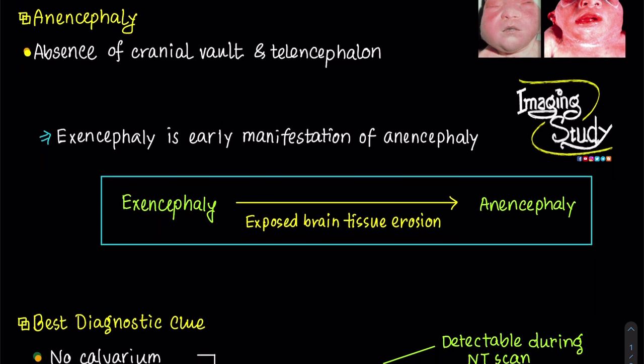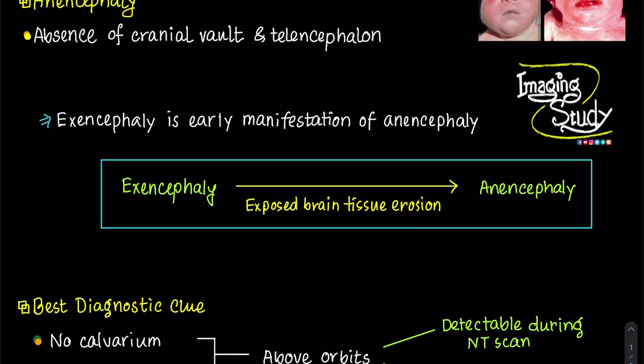Absence of the fetal cranium is the hallmark of anencephaly. The cranial neuropore normally closes between 23 days and 28 days. A failure in this process eventually leads to anencephaly with incomplete development of the brain and lack of formation of the cranial bones above the orbits. Exposed neural tissue wears away due to direct exposure to the amniotic fluid and constant trauma from fetal movements. Thus, exencephaly ultimately turns into anencephaly by the second trimester.